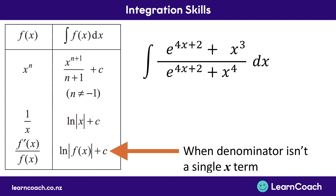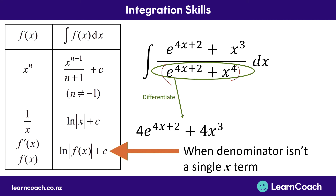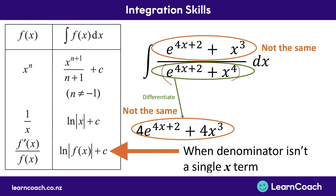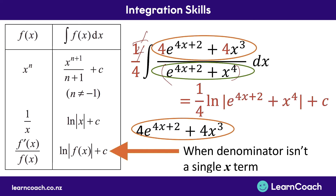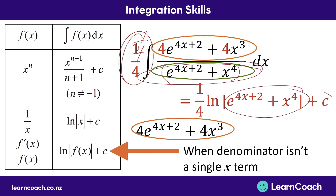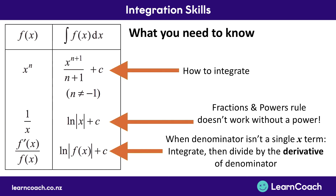Now for an even more complicated example — but the same steps apply. We notice there's no overall power on the bottom of the fraction, so we differentiate what's on the bottom, which gives us 4e to the power of 4x plus 2, plus 4x to the power of 3. We check if it's the same as what's on the top — it's not; the top is one quarter of the size. So we multiply the outside by 1 over 4. Now it matches, and we write 1 over 4 times log of whatever's on the bottom of the fraction, plus c.